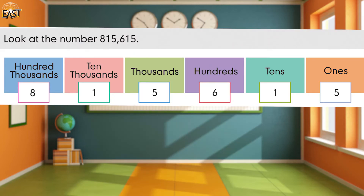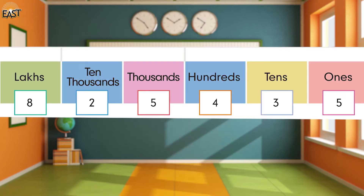I will try to teach you in an easy way and in easy language as well. We will start from numbers, which you have already covered in previous classes. First, we have to revise our place values. Repeat with me: ones, tens, hundreds, thousands, ten thousands, hundred thousands — this is the international method. In the national method, we say: ones, tens, hundreds, thousands, ten thousands, and lakh.